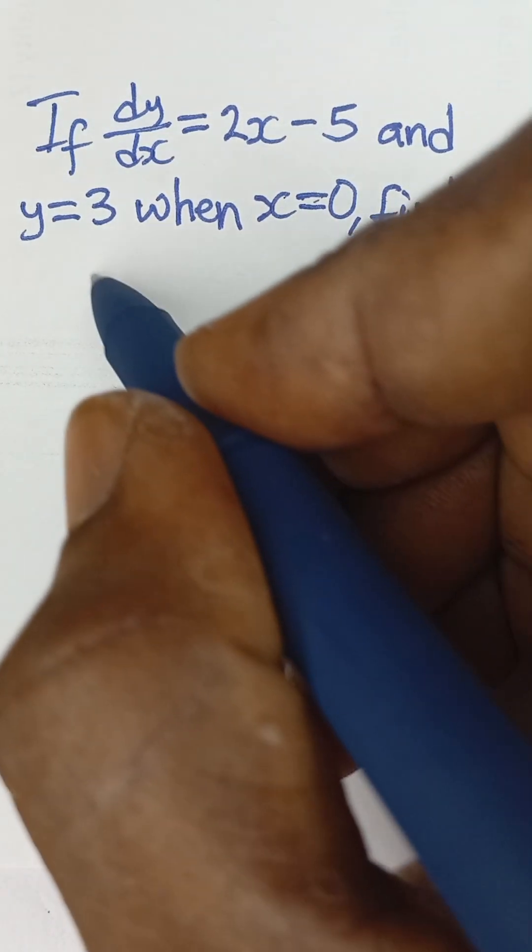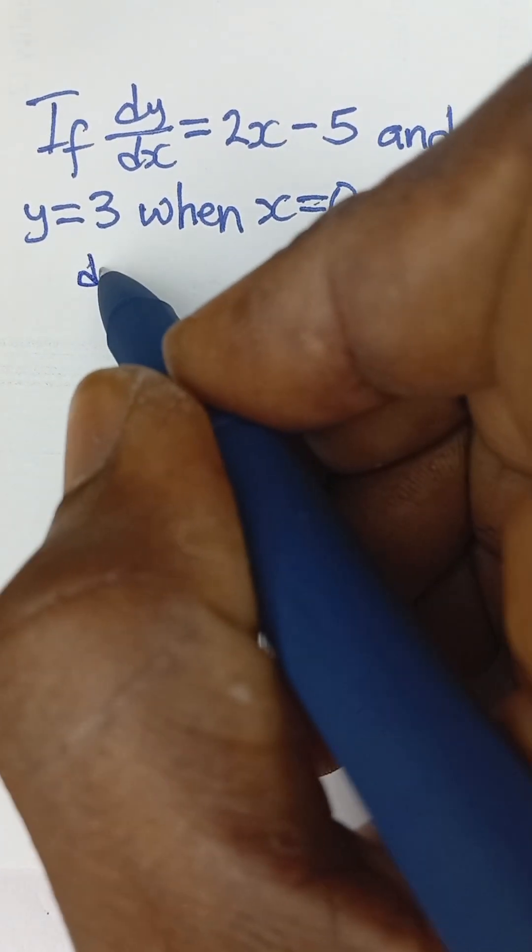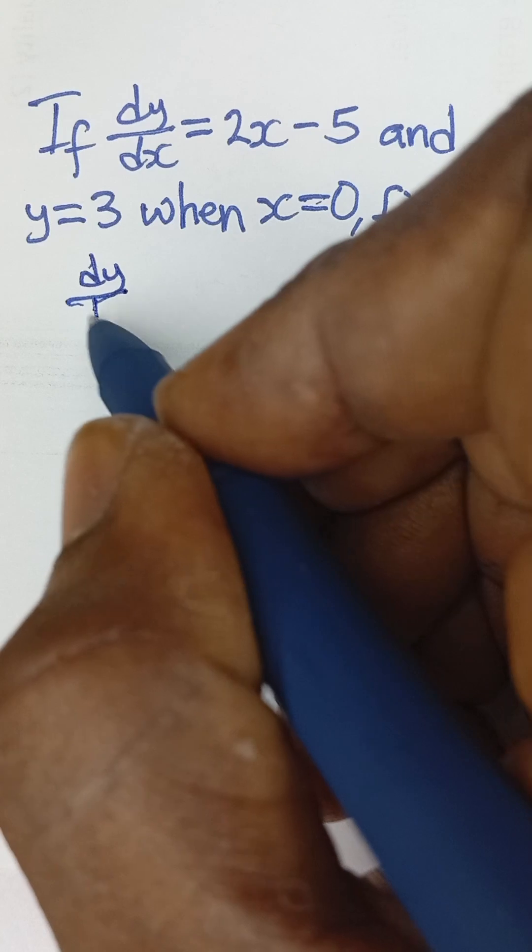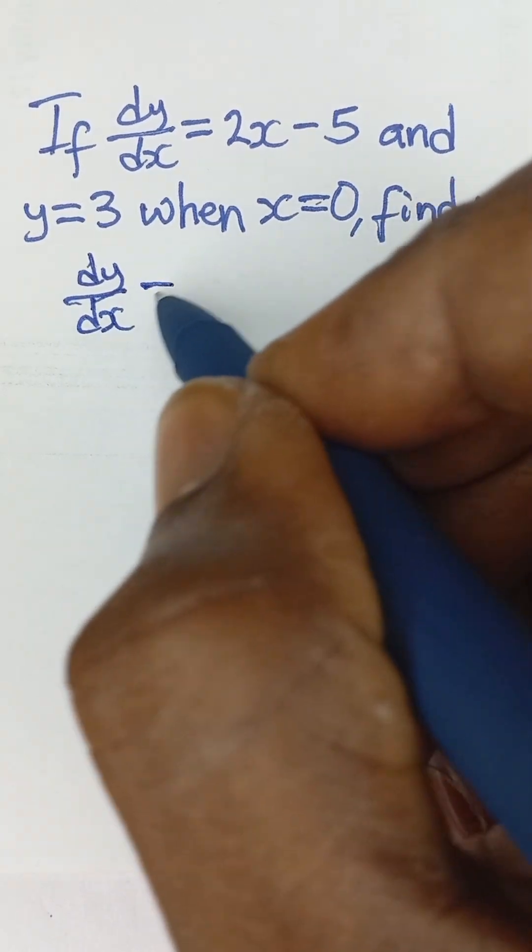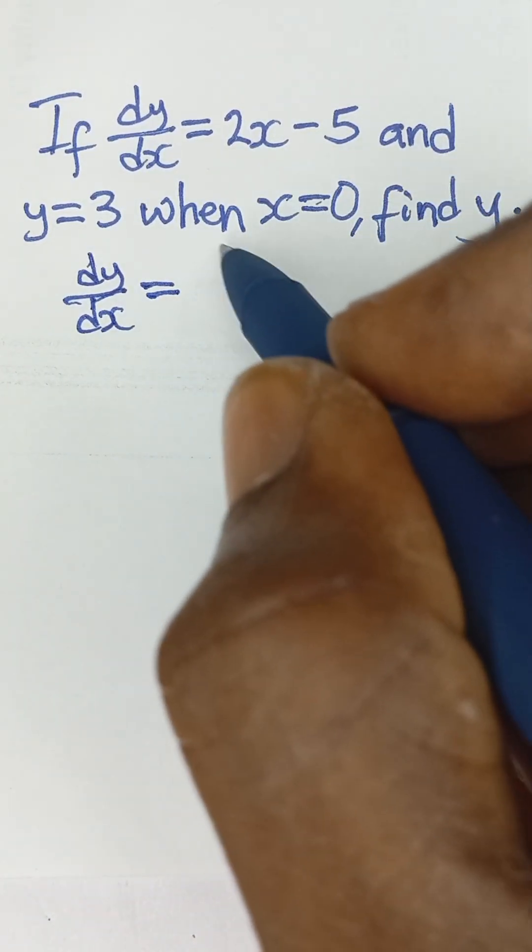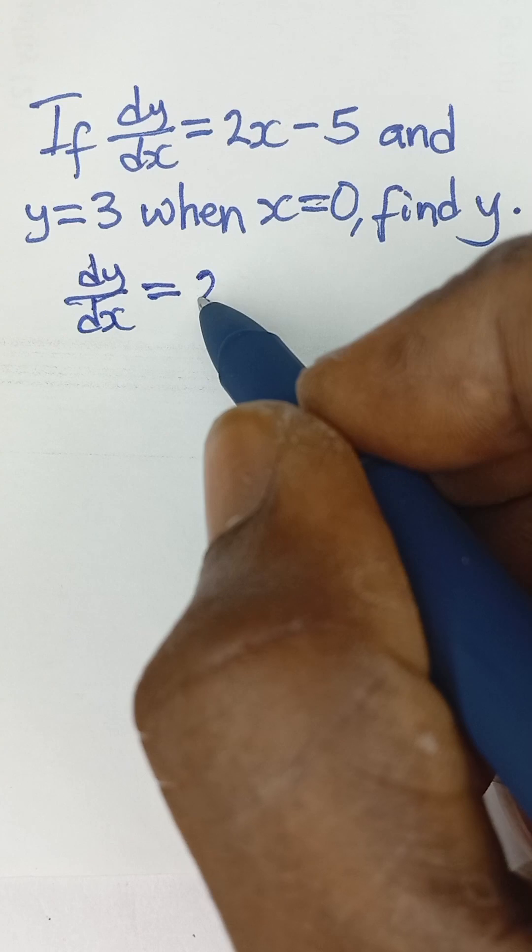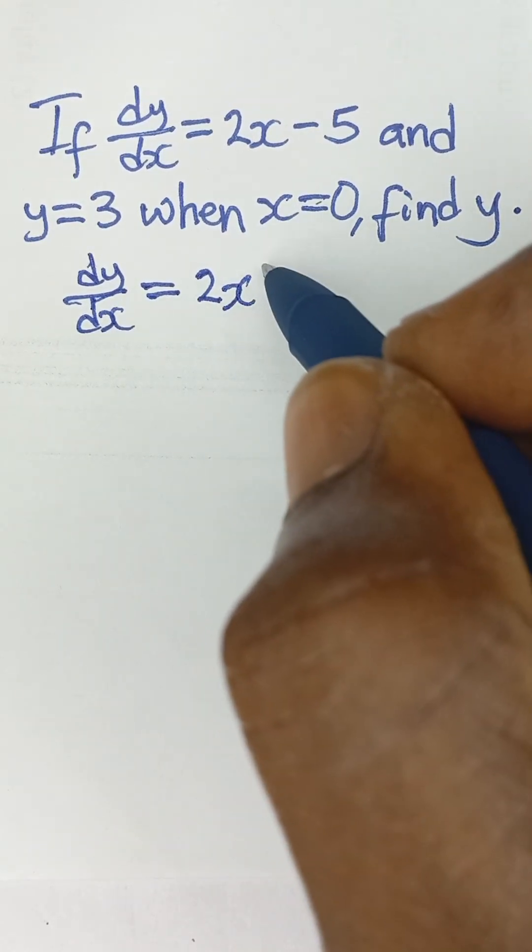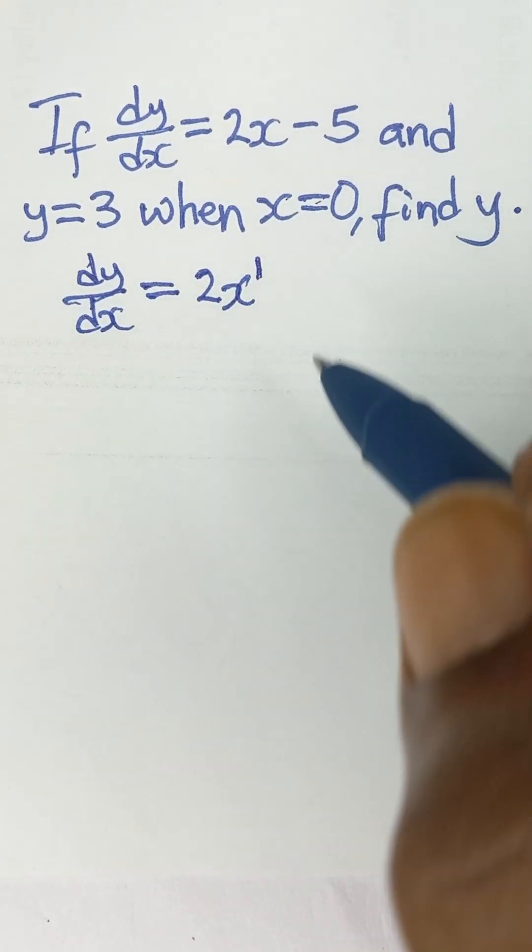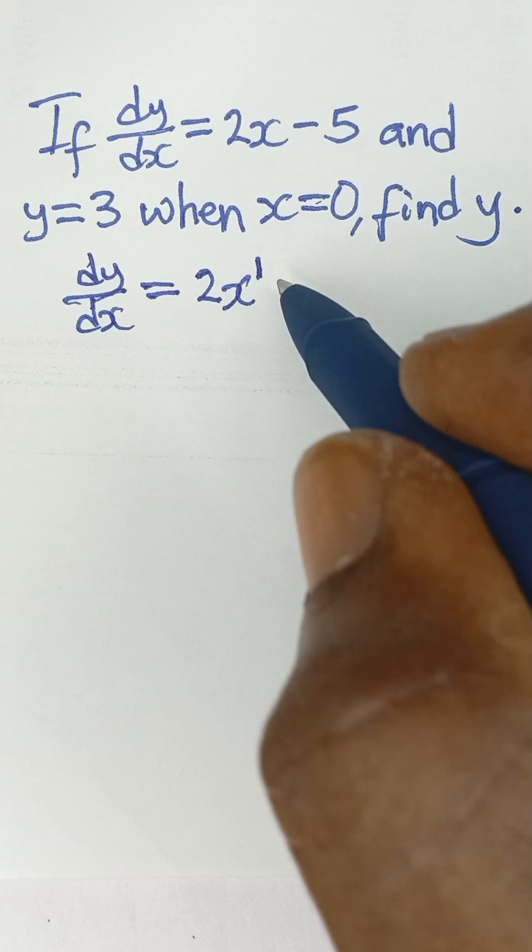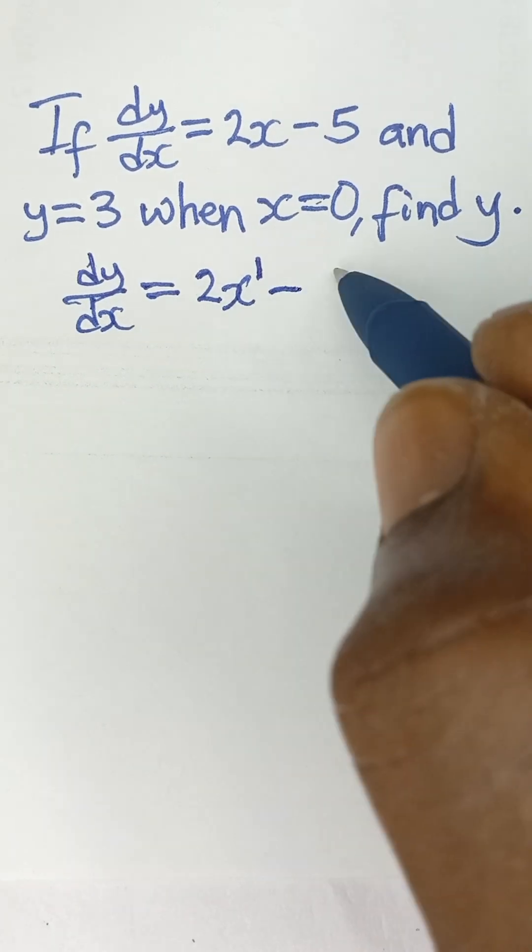Now let's rewrite this as dy/dx = 2x - 5. The 2x can be written as 2x to the power of 1, although it's not usually written. So 2x raised to power 1, then minus 5.